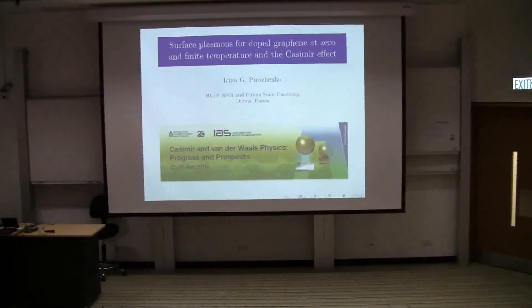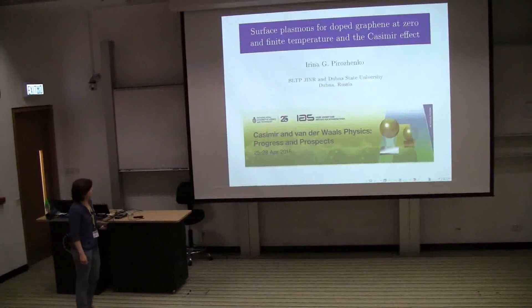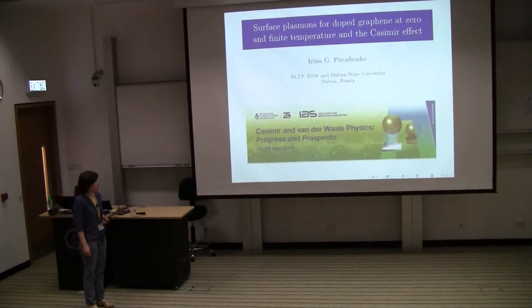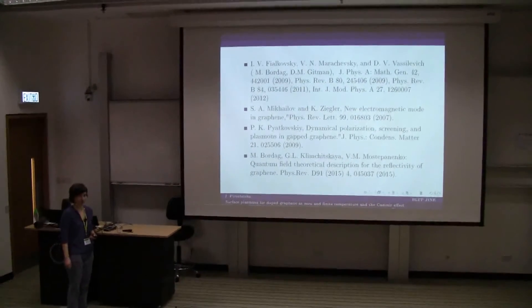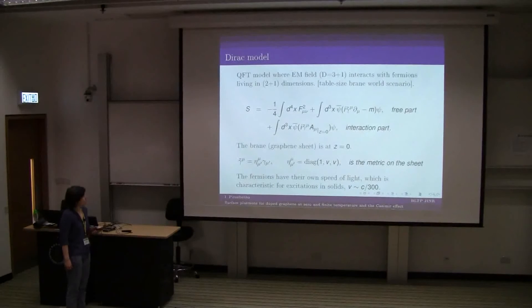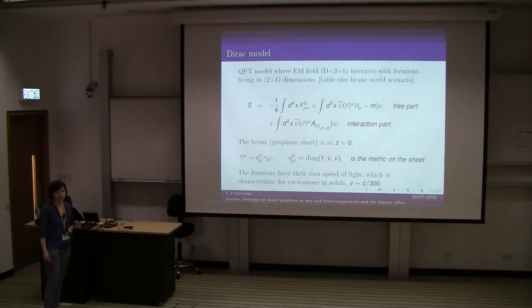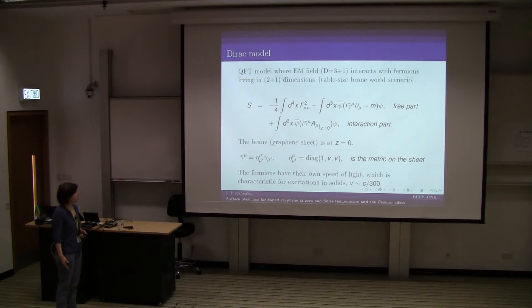Good afternoon. I'll start from some theory omitted by Umar in the morning. I'll speak about surface plasmons in the Dirac model for graphene. This is more or less the same research papers we have seen in the morning. The Dirac model is a sort of quantum field theory model where there is an electromagnetic field in three plus one dimensions which interacts with a fermion field in two plus one dimensions — a sort of table-sized rainbow scenario.